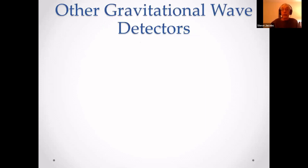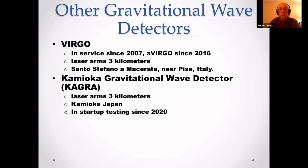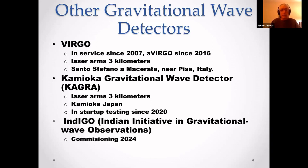Other gravitational wave detectors include Virgo, in service since 2007, with advanced Virgo since 2016 — laser arms are three kilometers, located in Italy. KAGRA, also with three-kilometer laser arms, is in Kamioka, Japan, in start-up testing since 2020 with some technical issues — it's built in an old mine. And now there's INDIGO, the Indian Initiative in Gravitational Wave Observations, currently in design and commissioning, expected to be commissioned in 2023.